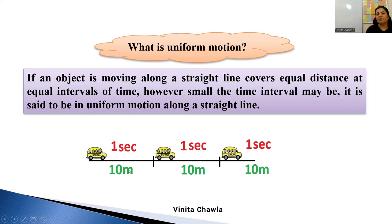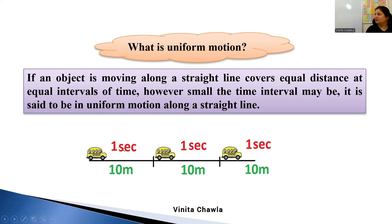So what is the speed? If I want to find the speed in the first interval, speed is distance upon time. We will simply divide 10 meters by 1 second, and you will get 10 meters per second as the speed of the bus.